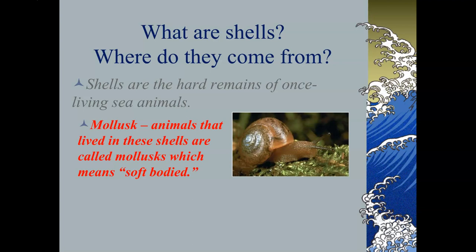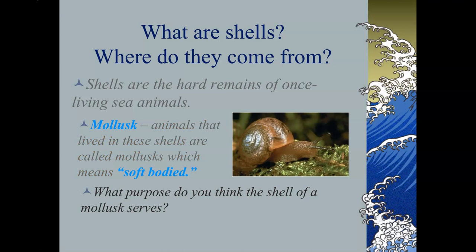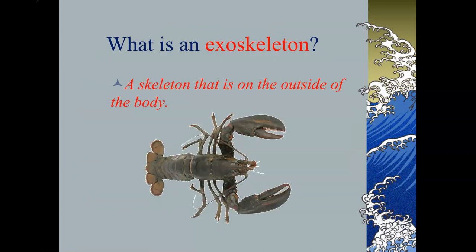Mollusks are animals that are soft-bodied. If you look at this little snail, you can imagine that a snail living in the intertidal zone would get pounded and crushed if it did not have something to protect its soft body — that is the purpose of a shell. The shell protects the soft body of the animal inside. Just like you and I, mollusks have skeletons, but their skeleton is on the outside of their body. Mollusks have exoskeletons — just as our skeleton supports our muscles and protects our vital organs, mollusk skeletons on the outside protect the soft body of the animal inside.